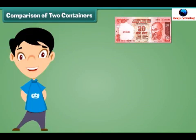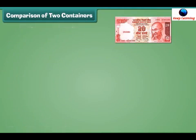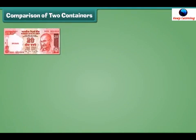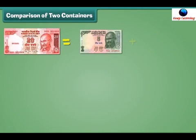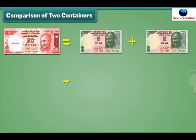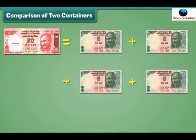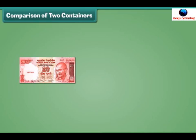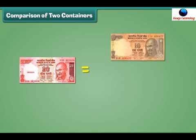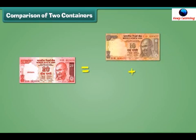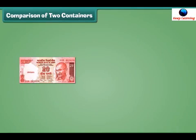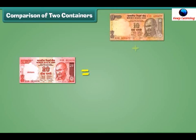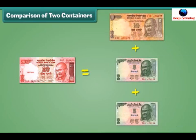This is a 20 rupee note. A 20 rupees note is equal to the sum of 4 five-rupee notes. A 20 rupees note is equal to the sum of 2 ten-rupee notes. A 20 rupees note is also equal to the sum of 1 ten-rupee note and 2 five-rupee notes.